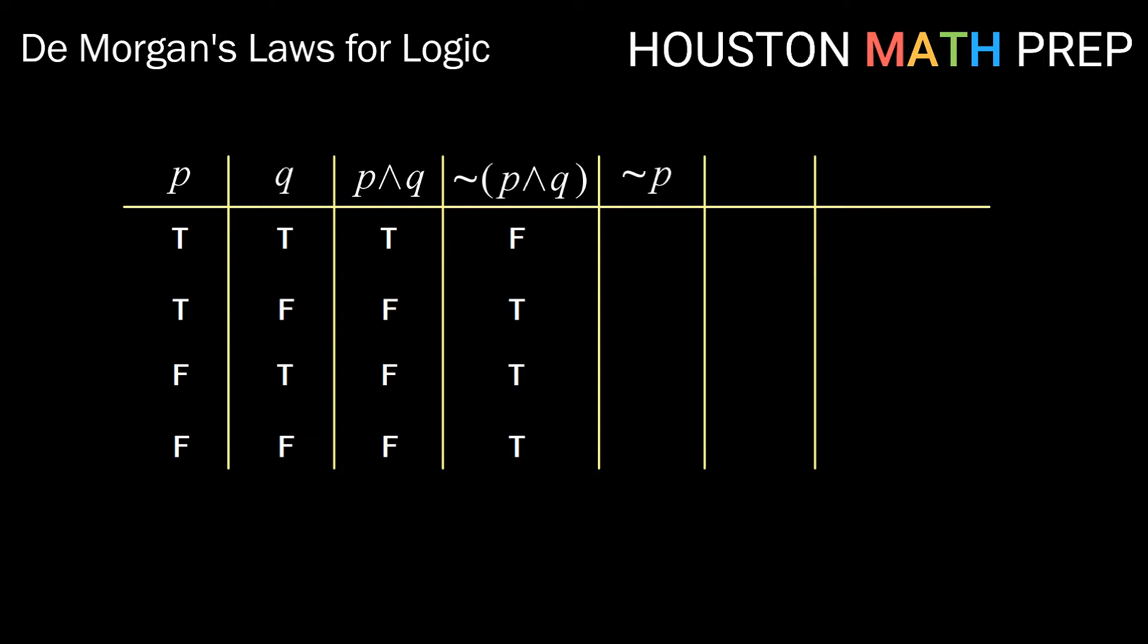Next, if we create not P, that should have the opposite for P. And if we create not Q, that should have the opposite for Q. Then if we create not P or not Q, well, that will be true anytime that at least one of those not P and not Q are true. So we get false, true, true, true.